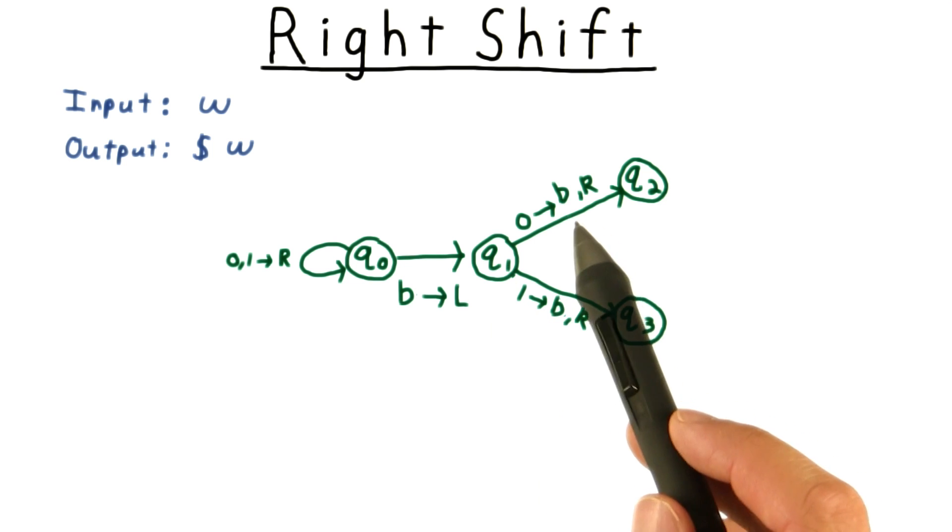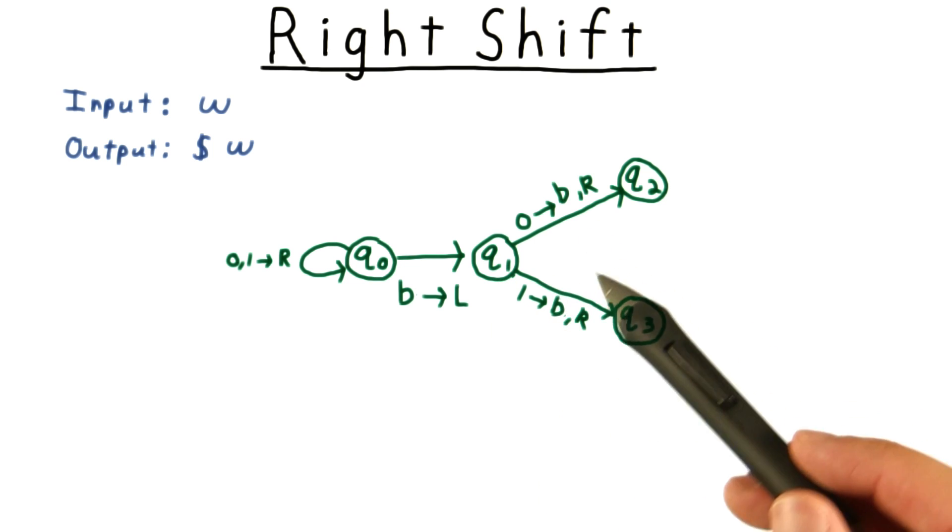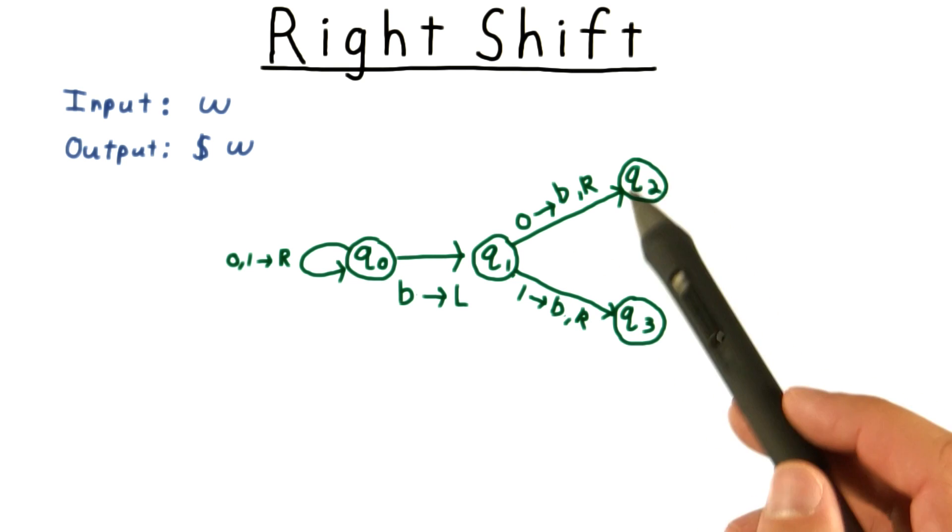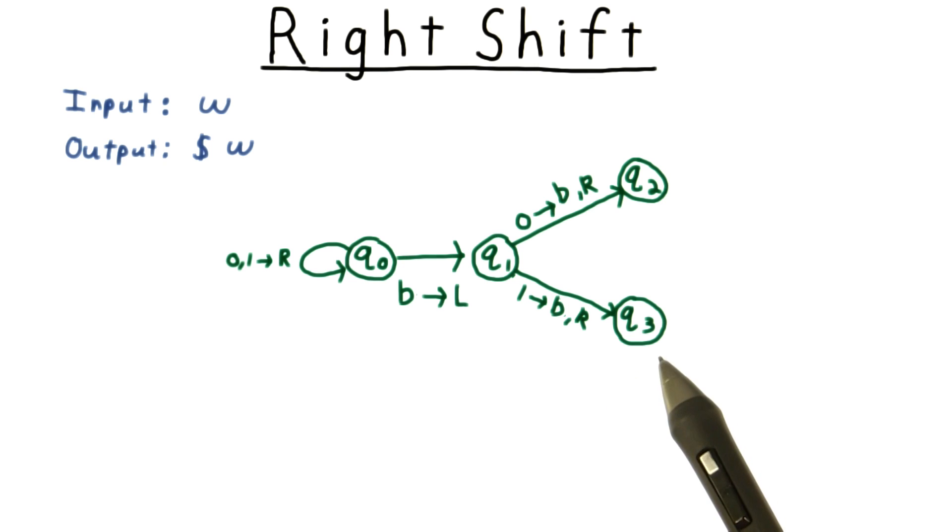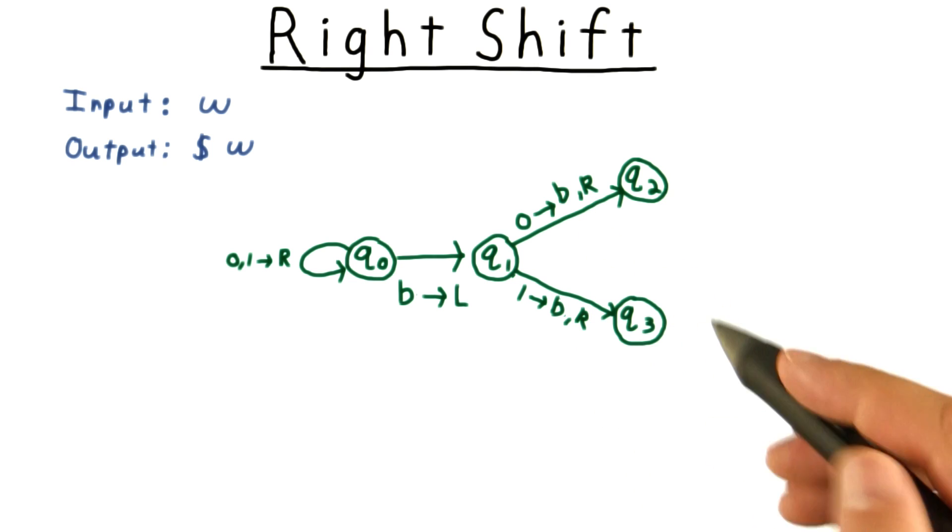We overwrite this symbol with a blank, but we remember what the symbol was by going into state q2 if it was a 0, and then to state q3 if it was a 1. In both cases, we move to the right.